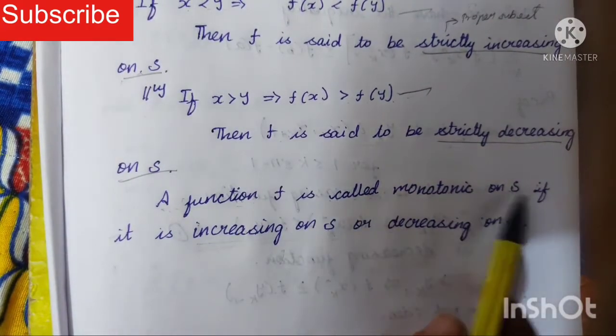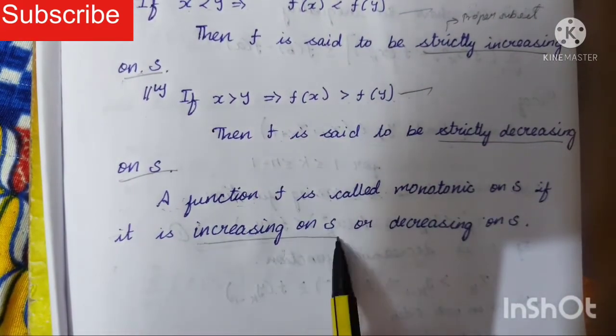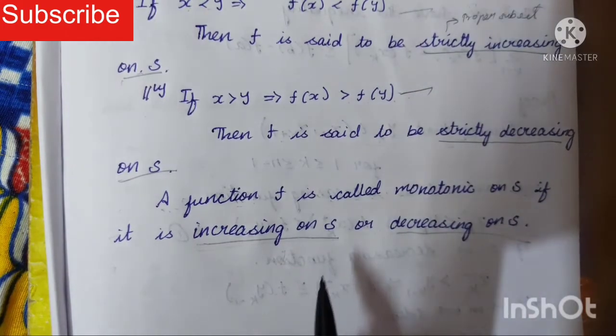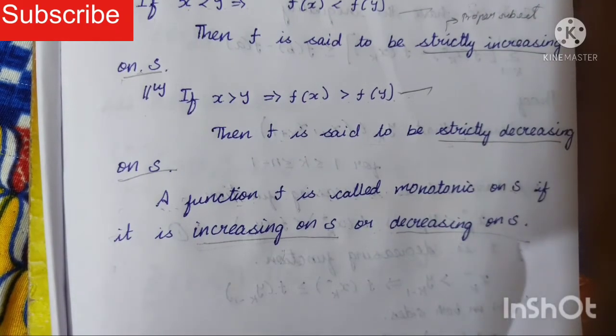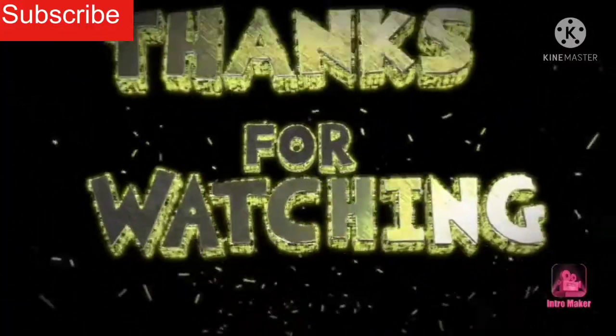A function f is called monotonic on S if it is increasing on S or decreasing on S. Whether it satisfies this condition, this is known as the monotonic condition. I hope you clearly understand about monotonic function.